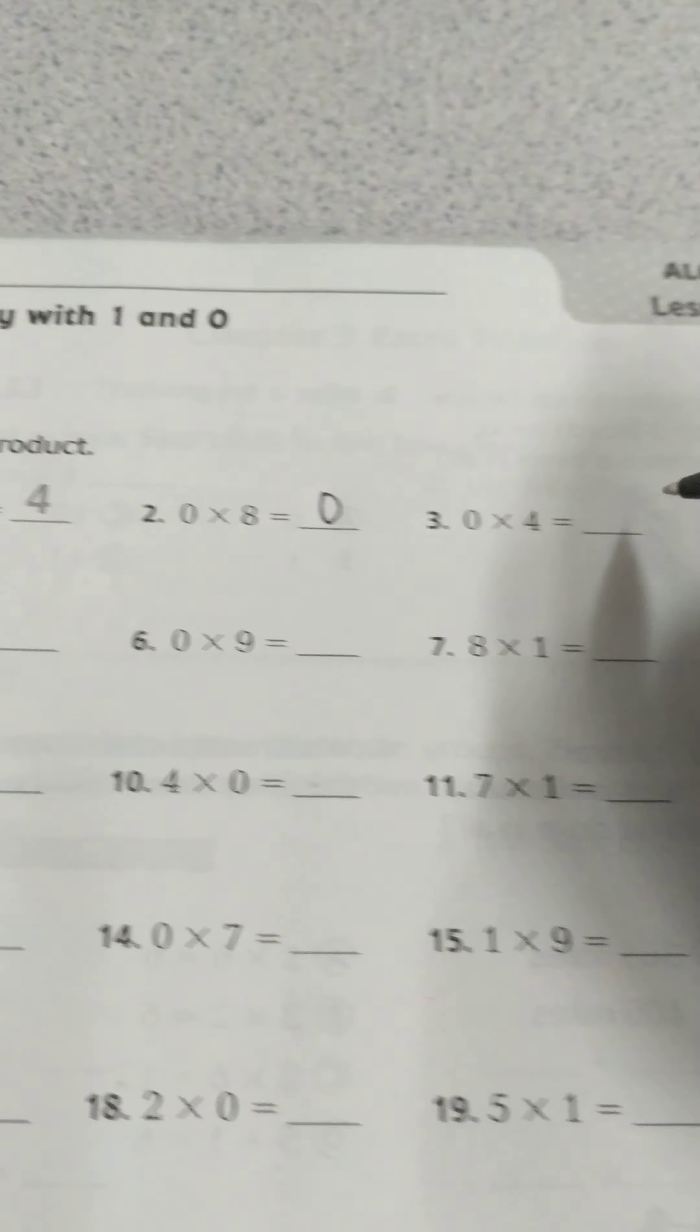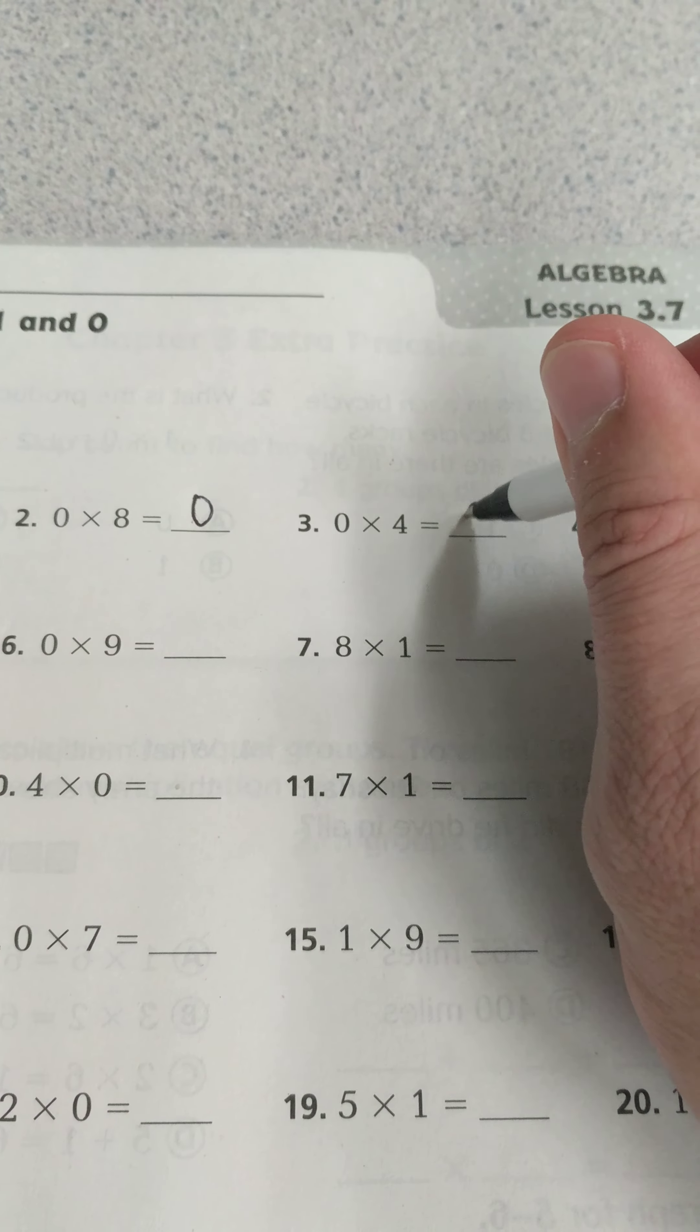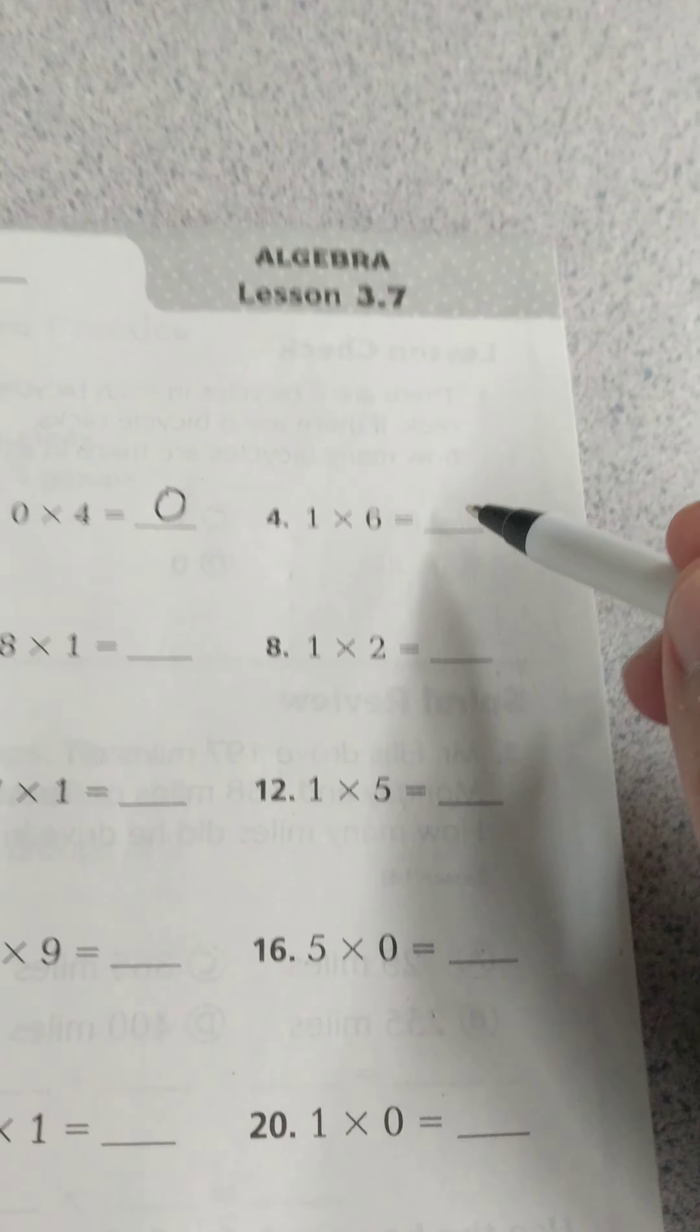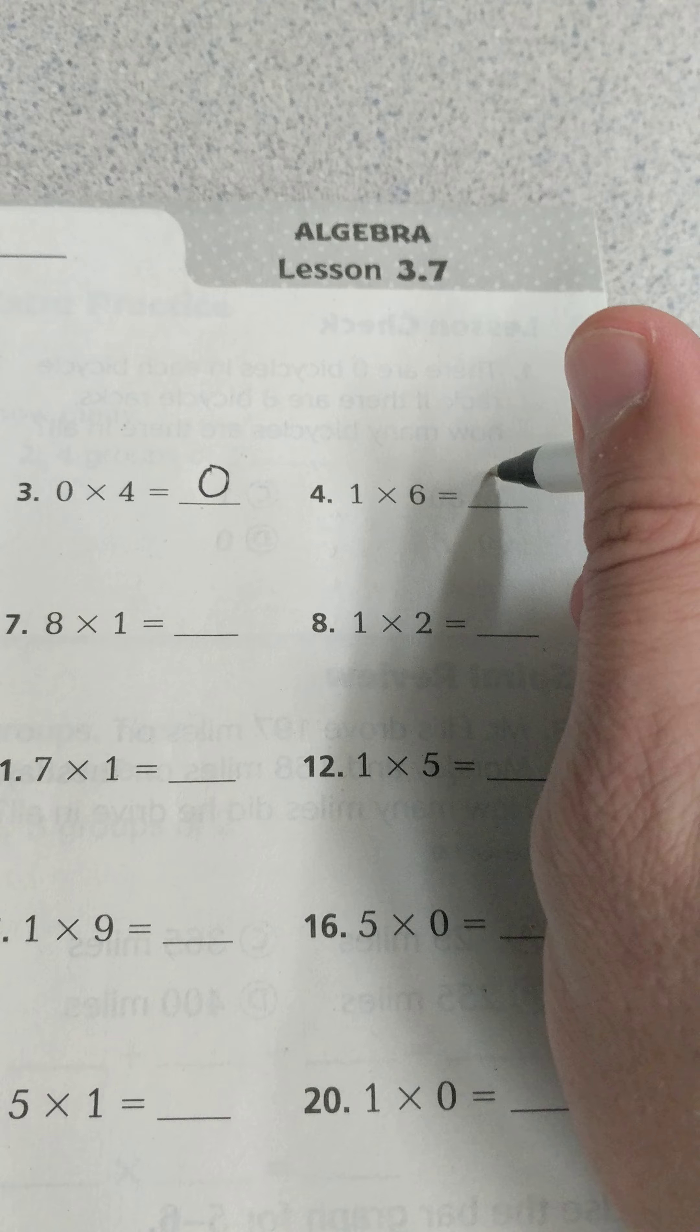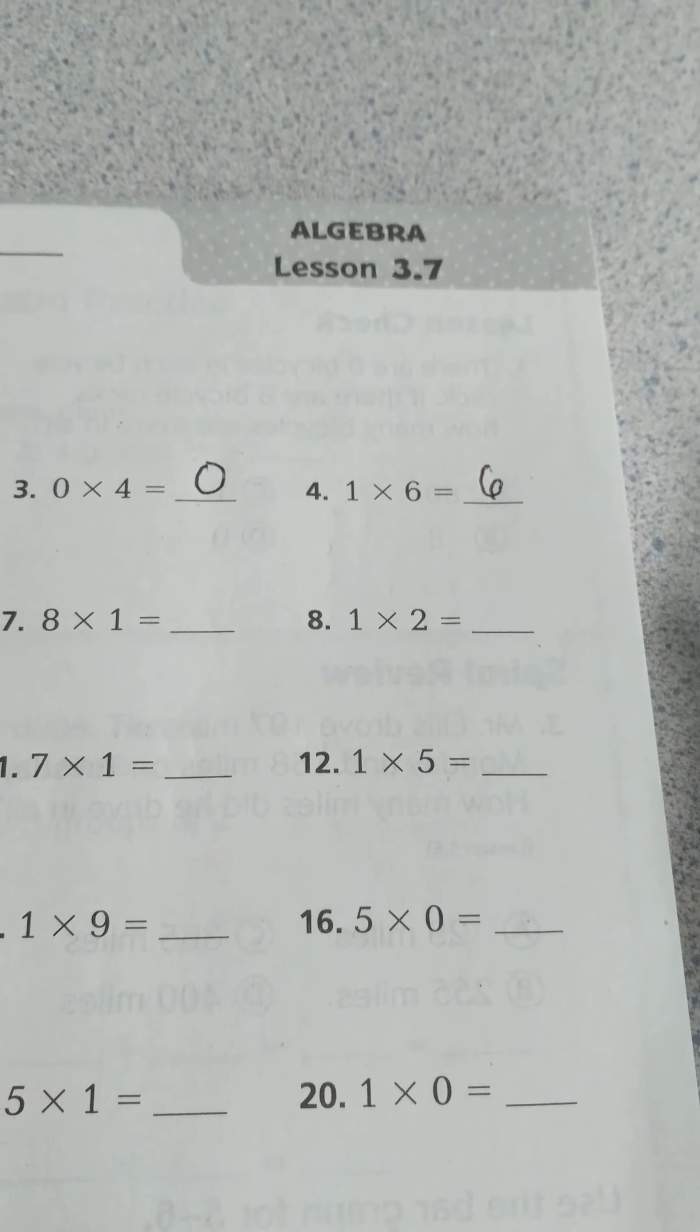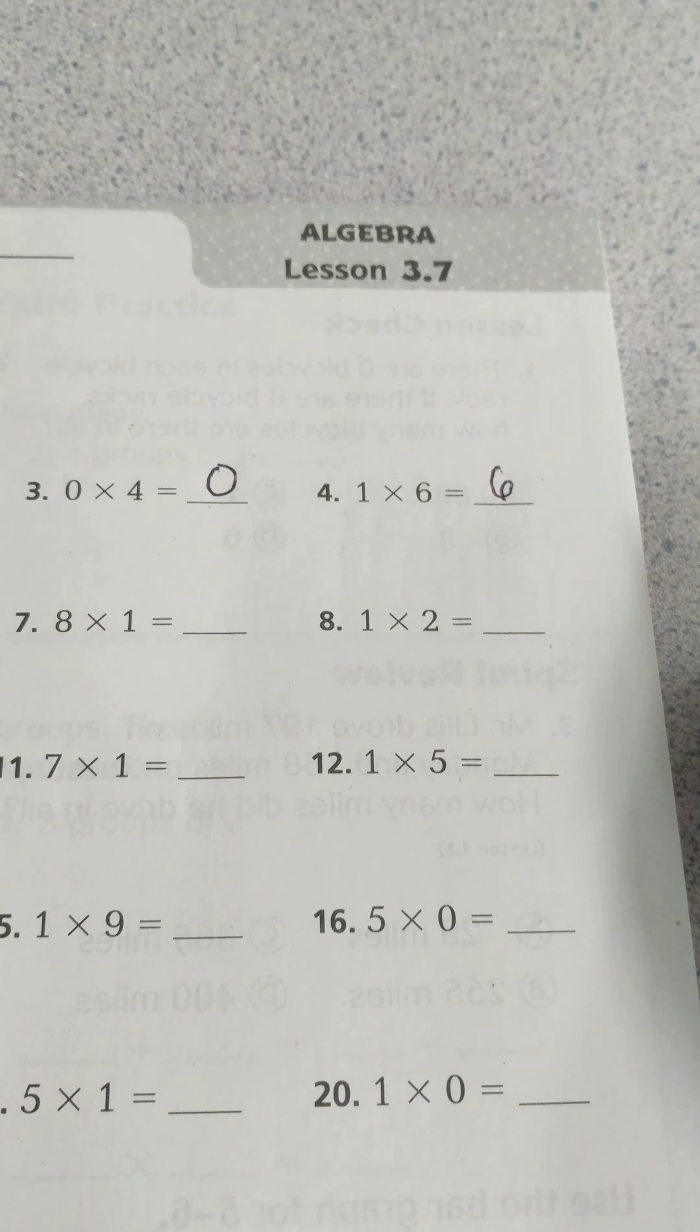Any of these problems that have 0, like 0 times 4, will end up being 0. But whenever you see a problem times 1, it is whatever the number is multiplied by. So 1 times 6 will equal 6,